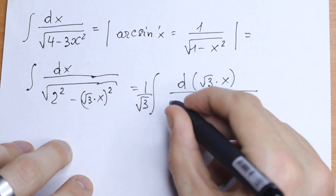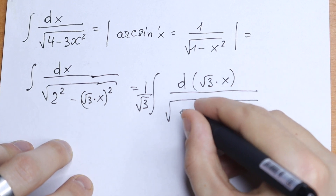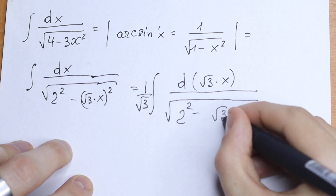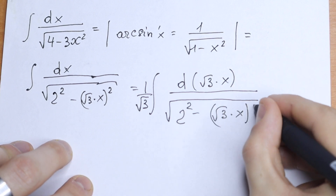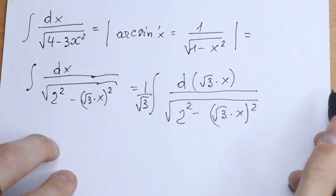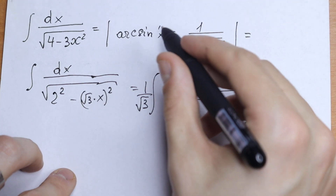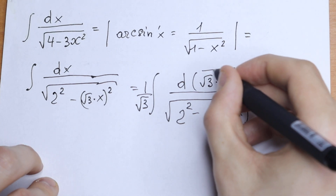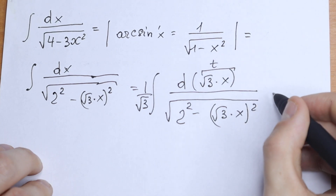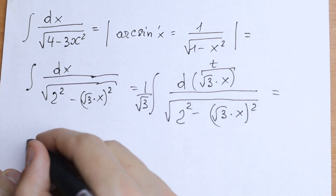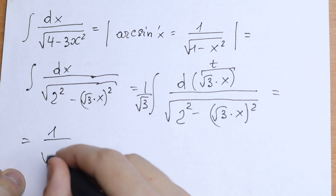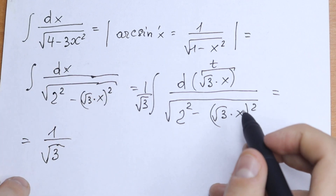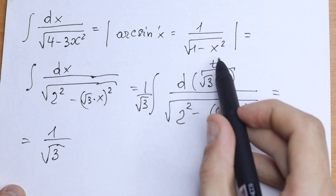Writing our denominator, we'll have 2 squared minus (square root of 3 times x) squared. Take a look — this is our arcsine case. If we put this element as t, we will have our standard case. So instead of square root of 3 times x, I put t.